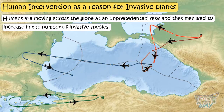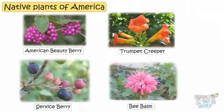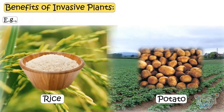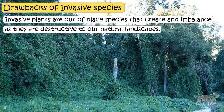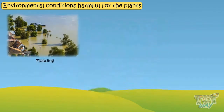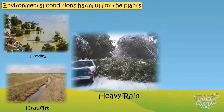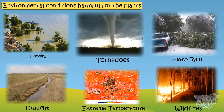Now let's see what kinds of environmental conditions are bad for plants. Flooding, drought, heavy rain, wildfires, tornadoes, and extreme temperatures are not good for plants. They may uproot and destroy many plants.